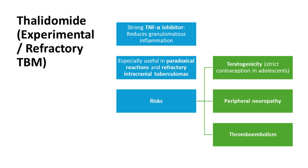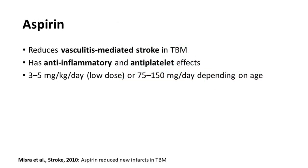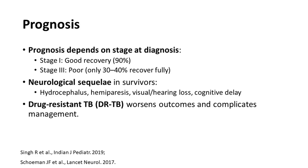Remember to use aspirin in patients with TBM to prevent vasculitis-mediated stroke. The dose is small — 3 to 5 mg/kg/day — and is used for three to four months until the risk of stroke comes down. Prognosis of TBM depends on the stage at diagnosis. Stage 1 diagnosed with fever and headache carries a good recovery chance. Stage 3 results in significant morbidity and mortality, with survivors suffering hydrocephalus, hemiparesis, visual and hearing loss, cognitive delays, and possibly being bedridden.